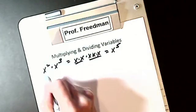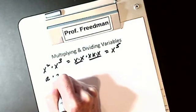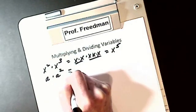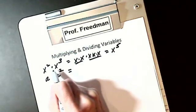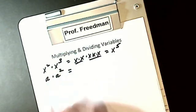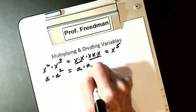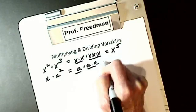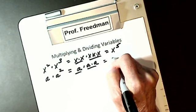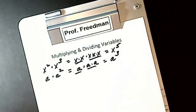Let's say I have a times a squared. If I have no exponent, a one is understood. So I have one a. a squared is a times a. So in reality, I have a to the third power.